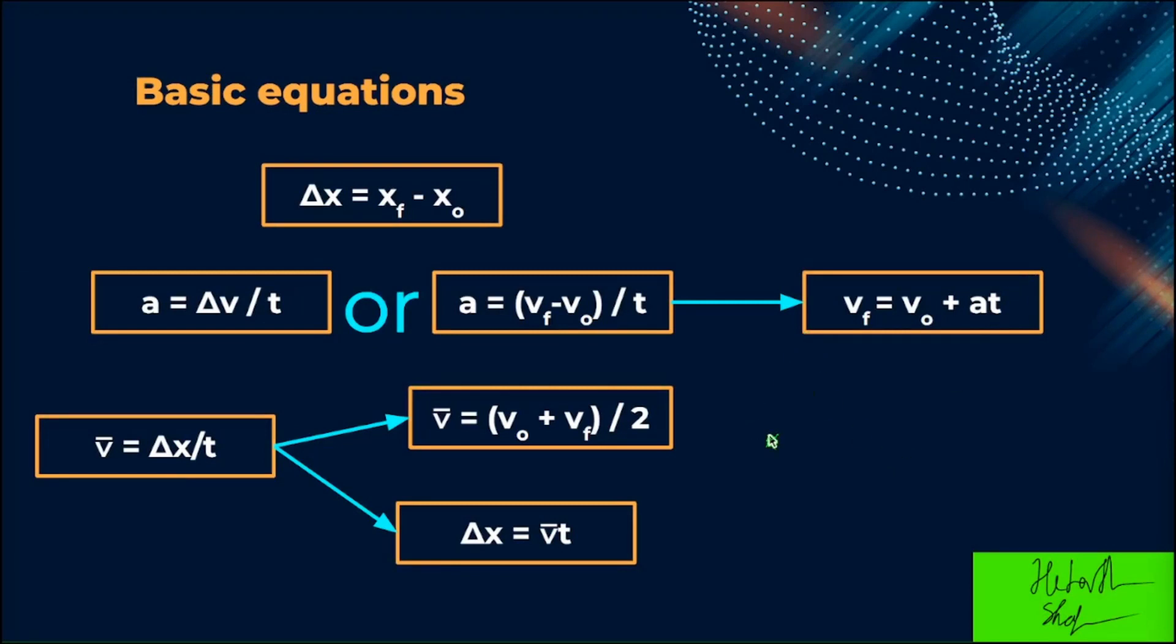Now we have a few basic equations. First we have delta x equals final position minus initial position, or x sub f minus x naught. Anytime we have a delta sign, it means change in value, which can be found by subtracting the final minus initial of the value that it represents.